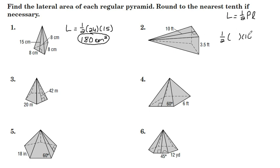To get the perimeter of the base, 3.5 times 4 gives us 14. Putting all this together, one half times 14 times 10, 70 square feet.